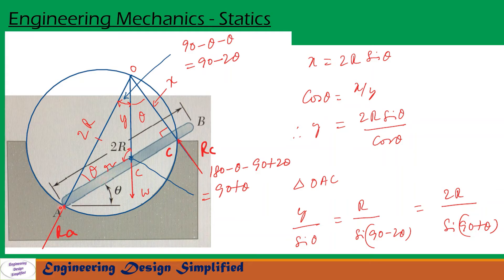Now let us write the sine rule for triangle AOC. The sine rule gives: y / sin θ = r / sin(90 − 2θ) = 2R / sin(90 + θ).